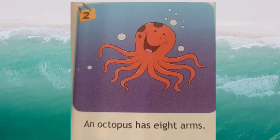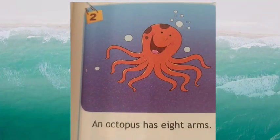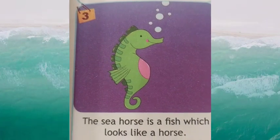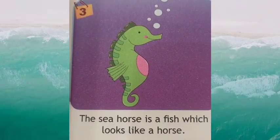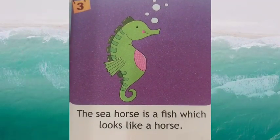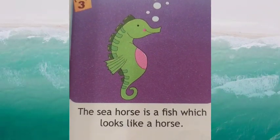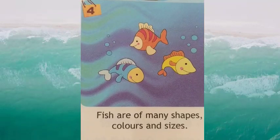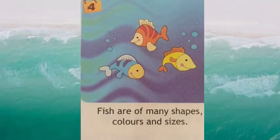Box number two: an octopus has eight arms. Octopus ke eight arms hote hain. Box number three: the seahorse is a fish which looks like a horse. Seahorse ek fish hai jo horse ki tarah dikhti hai.